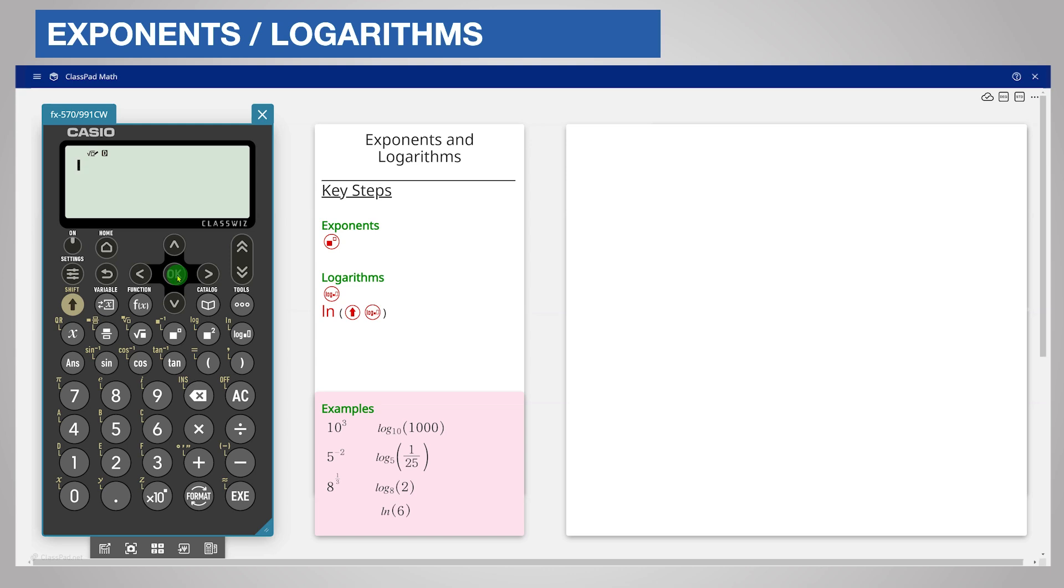An exponent is another name for an index. For example, to evaluate 10 cubed, enter 10, press the exponent key, and enter the exponent 3. Press OK or the Execute key to complete the calculation. 10 cubed is 1000.